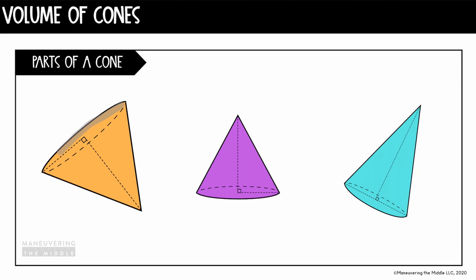Let's start by making sure we understand the parts of a cone. I'm first going to highlight the base of each cone. You can see that every cone has one base, and no matter how the cone is sitting or which direction it's facing, the base is the circular face. Next, I'm going to label the height of each cone, which is the perpendicular distance between the vertex of the cone and the base.